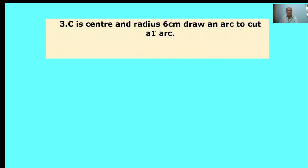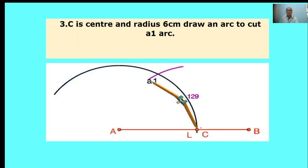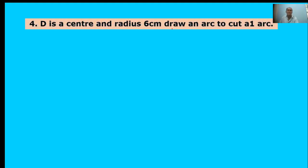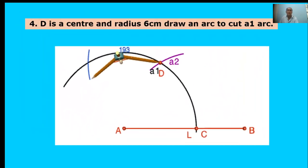C is center and radius 6 centimeters, draw an arc to cut the A1 arc. Here, center C, radius 6 centimeters, draw one arc. That is called A1. D is center and radius 6 centimeters, draw an arc to cut the A1 arc. Point D is the intersect point. D is center point, radius 6 centimeters. Draw an arc to cut the previous arc at A1. This is point E.